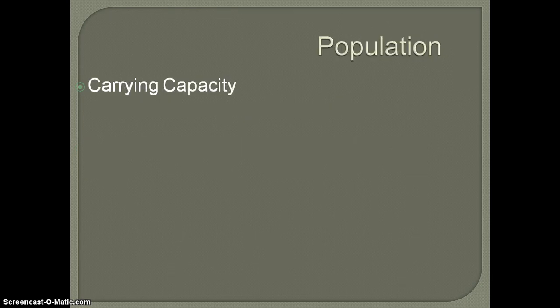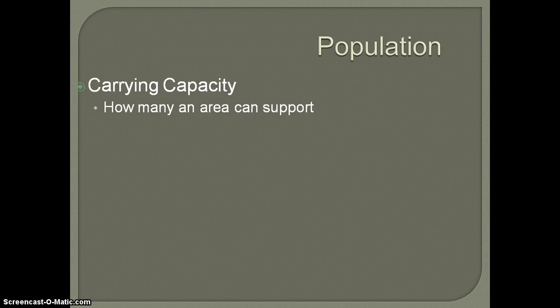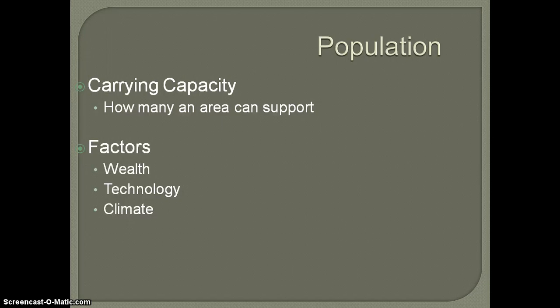The last thing we'll discuss in this section is what's called carrying capacity, and this all relates to the three different types of density we've been referring to. Carrying capacity has been a concern for people — scientists, social scientists, geographers — really since the Industrial Revolution. Thomas Malthus is really the first one that starts to talk about it, and we'll discuss him later. Basically, this is just referring to how many people an area can support. Carrying capacity is going to fluctuate across time and space because some land is going to be more productive than others.